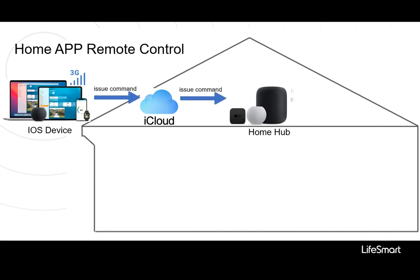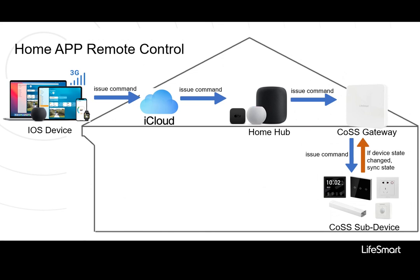HomePod, HomePod Mini, and Apple TV can automatically be set up as Home Hubs. So you can control your home even if you are not at home — just make sure you have signed into iCloud on your iOS device with the Apple ID which you used to set up the gateway in the Home app. The Home Hub can communicate with the gateway on the local network, and because the hub is connected to the internet, you can control your home even when you are not in it.